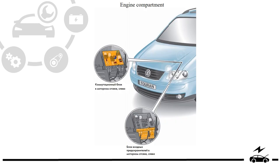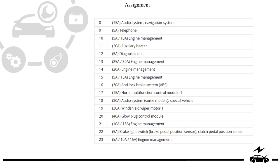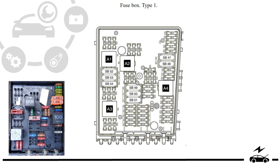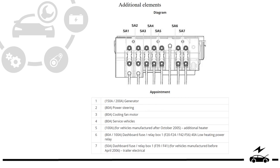Engine compartment fuse box: location. Type 1 assignment. Type 2 — Sierra's Carlo — designation.